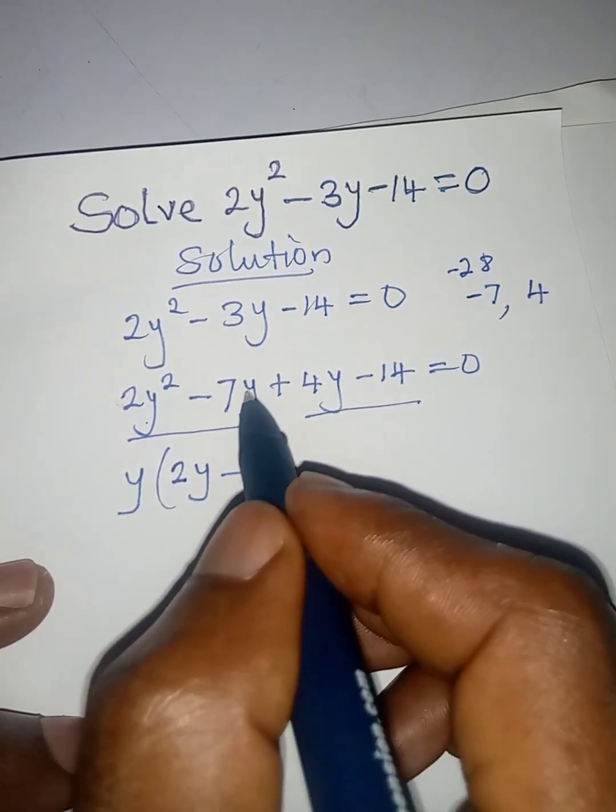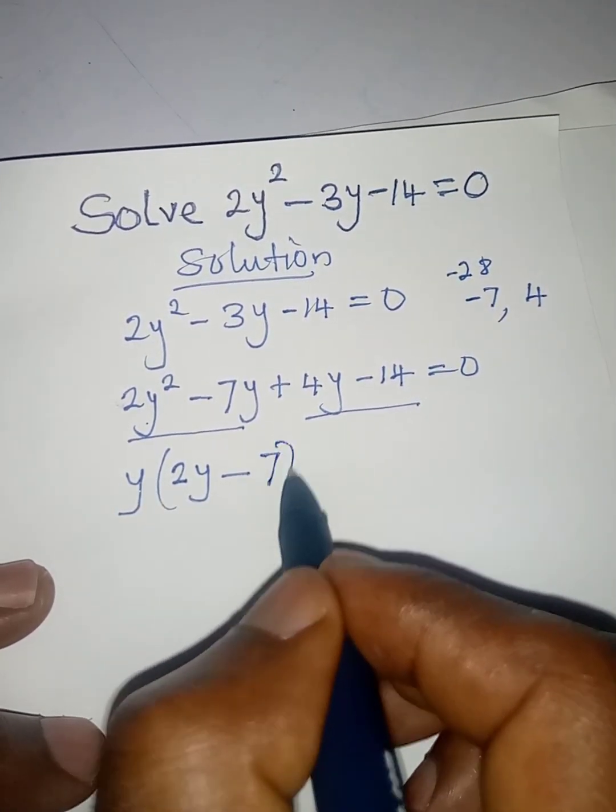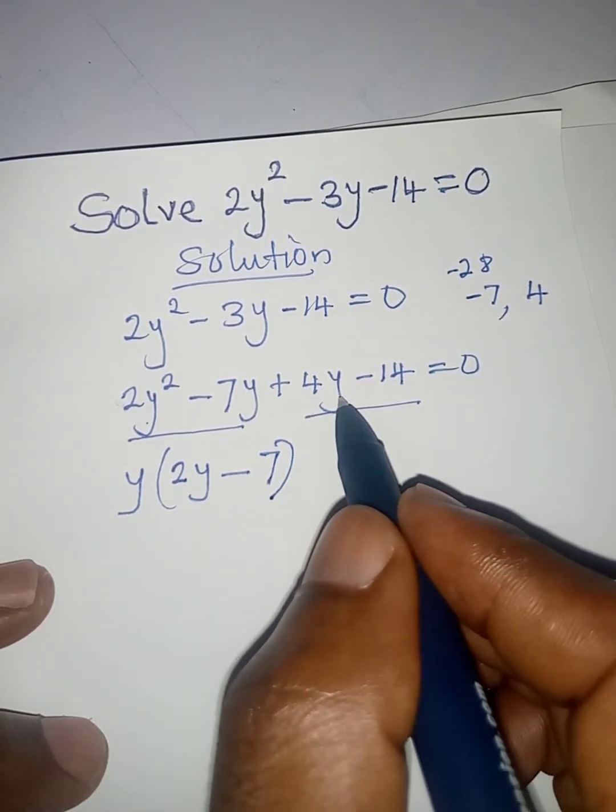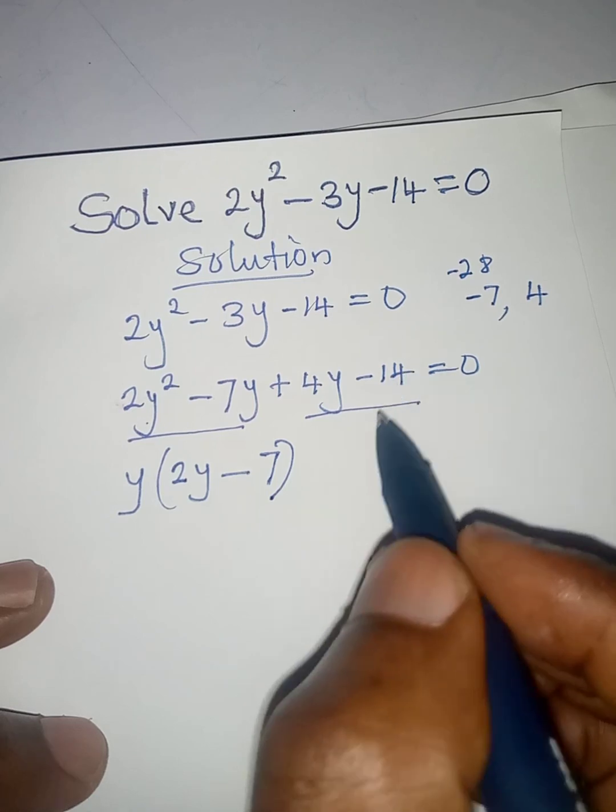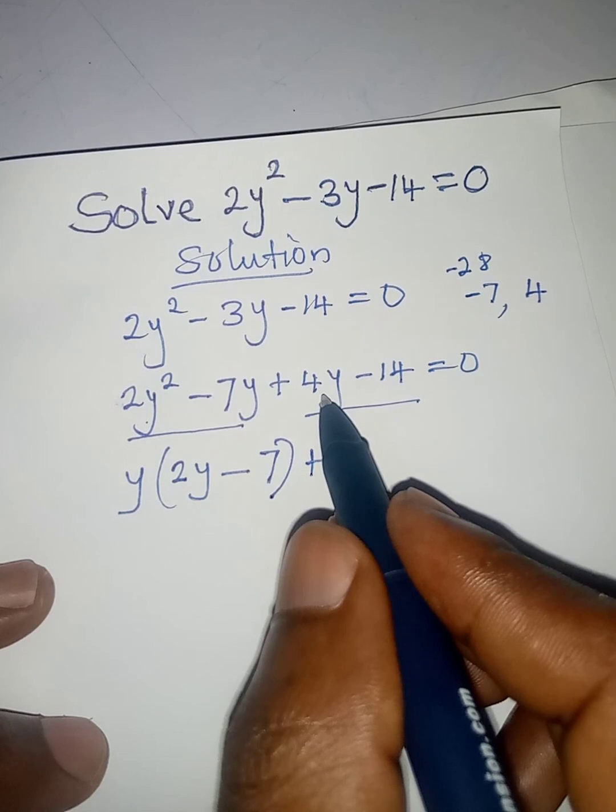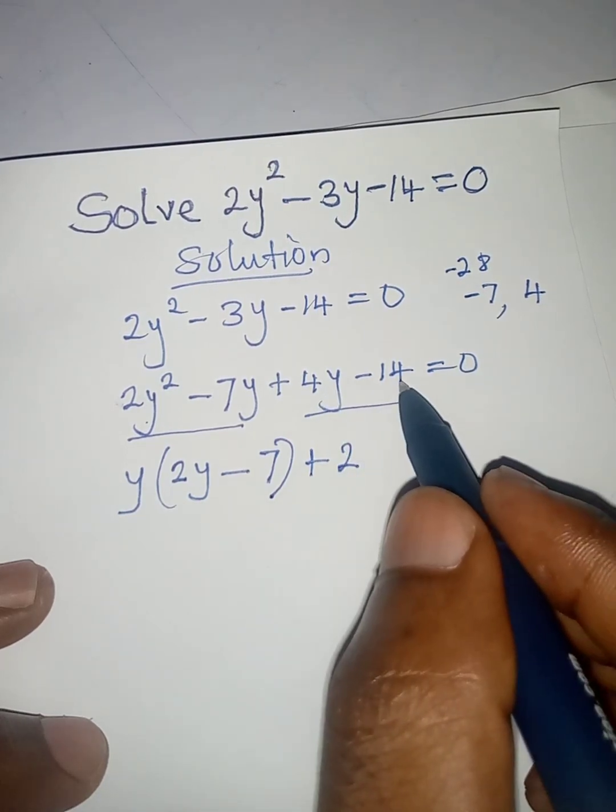Now we have 4y minus 14 to deal with, and the common factor there is going to be 2, because 2 can go into 4 and it can go into 14. I shall open the bracket.